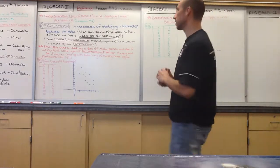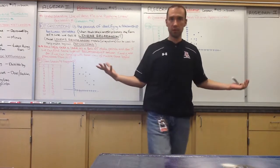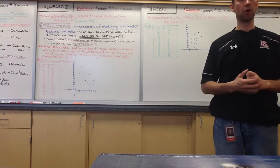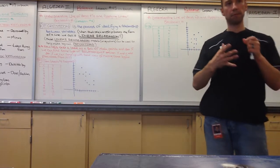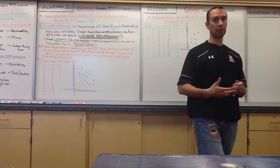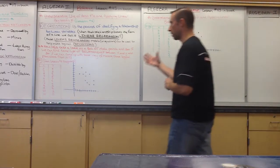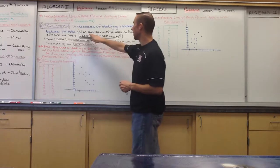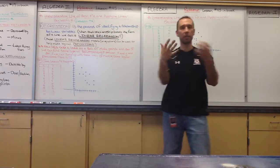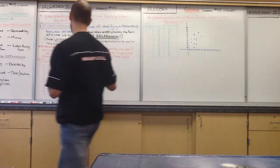All regression is is the process of identifying a relationship between two variables, putting it in terms of some model — or like we're going to be doing — putting it in terms of a linear equation. When that relationship takes the form of a line, we call it linear regression. Before it was linear programming; now it's linear regression. That's what we're focusing on here.